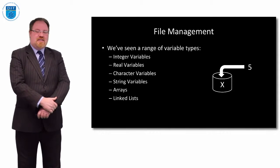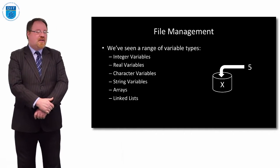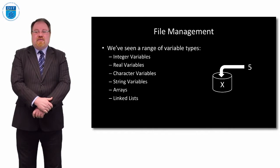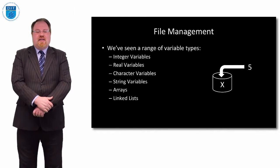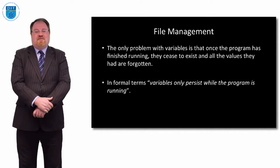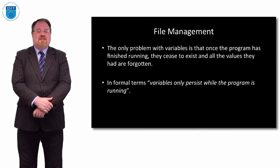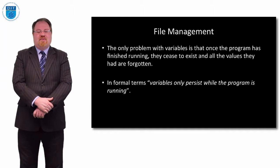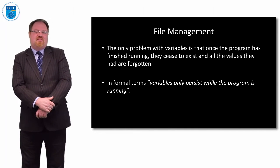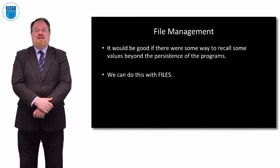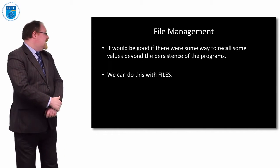We've seen already that there's a range of variable types: integers and reals, characters and strings, arrays and linked lists, and we know we can store numbers in these different types. The problem of course is that once the program is finished, all those values go away — the values are forgotten. In formal terms, variables only persist while the program is running, so it would be nice if there was some way to remember the values even after the program is done, and we can do that with a file.